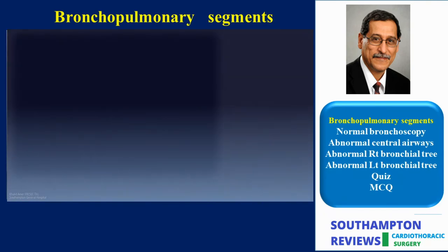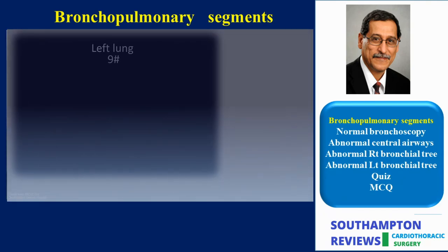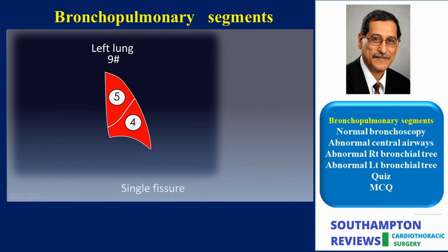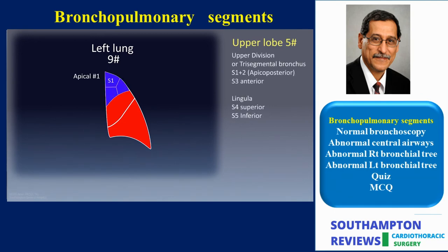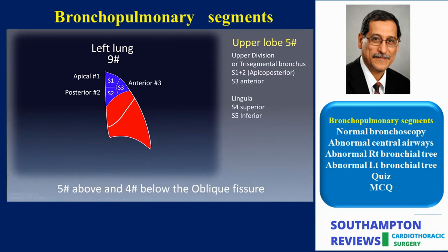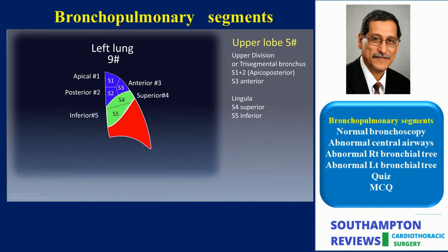The left upper lobe, which has five segments, is now larger than the right upper lobe. The left upper division has three segments: the apical (LS1), the posterior (LS2), and the anterior (LS3). The lingula has two segments: the superior (LS4) and the inferior (LS5).